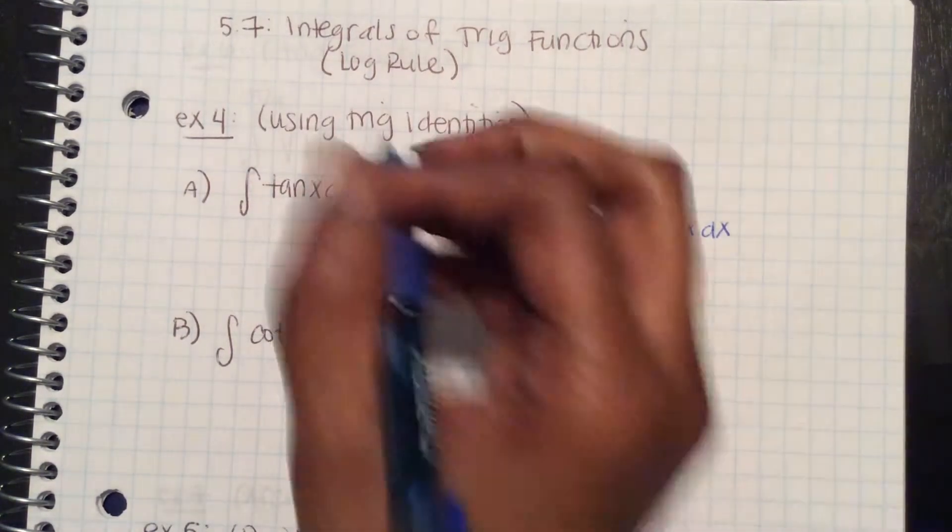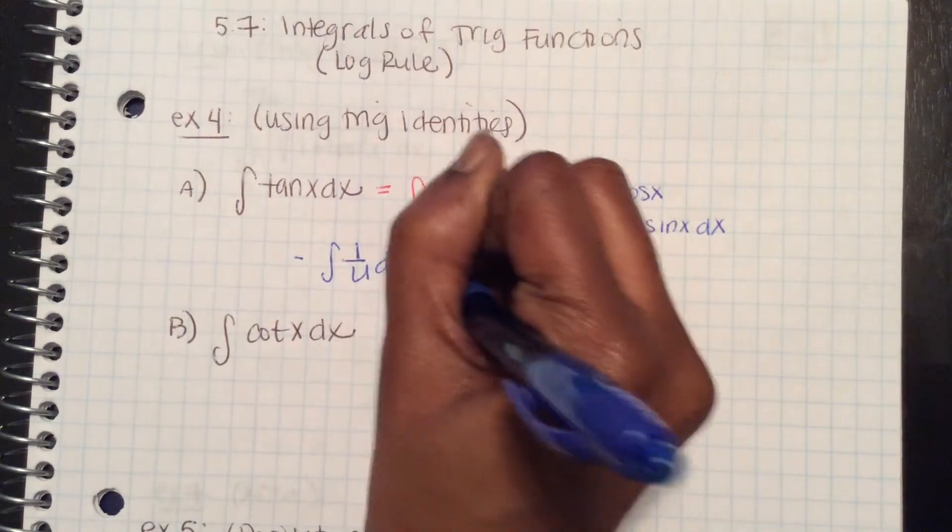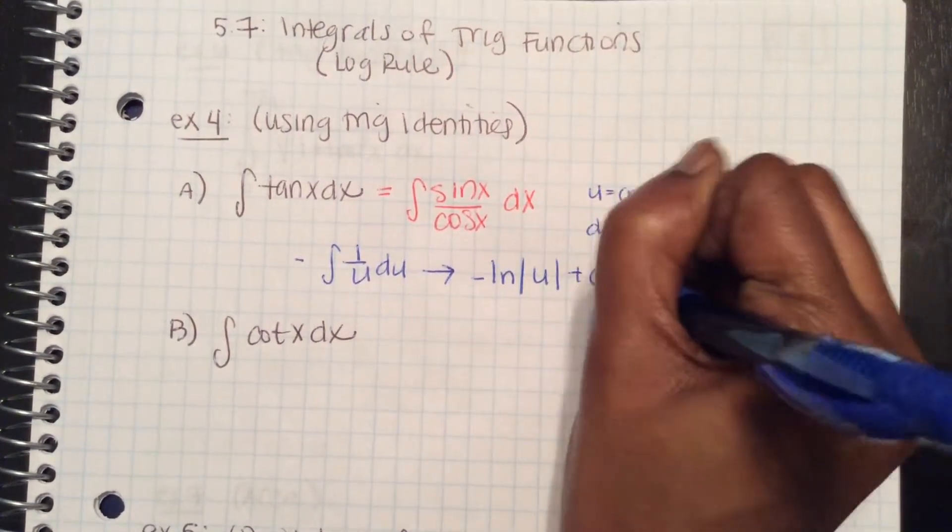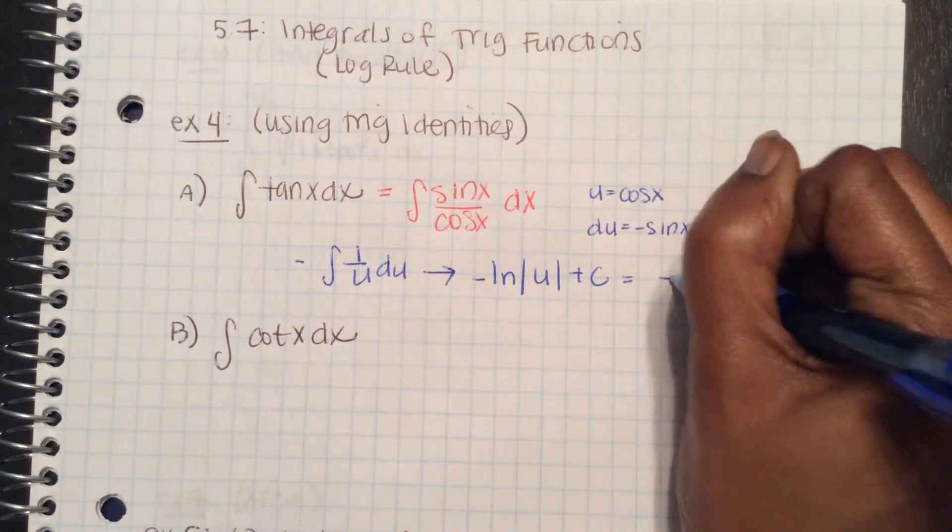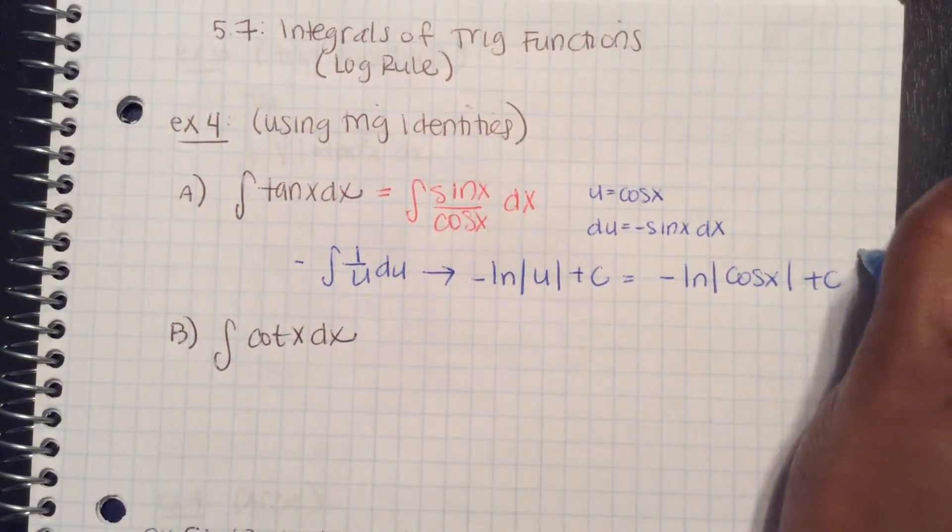Therefore this becomes negative integral 1 over u du, which is negative ln absolute value of u plus c. So it's negative ln absolute value cosine x plus c.